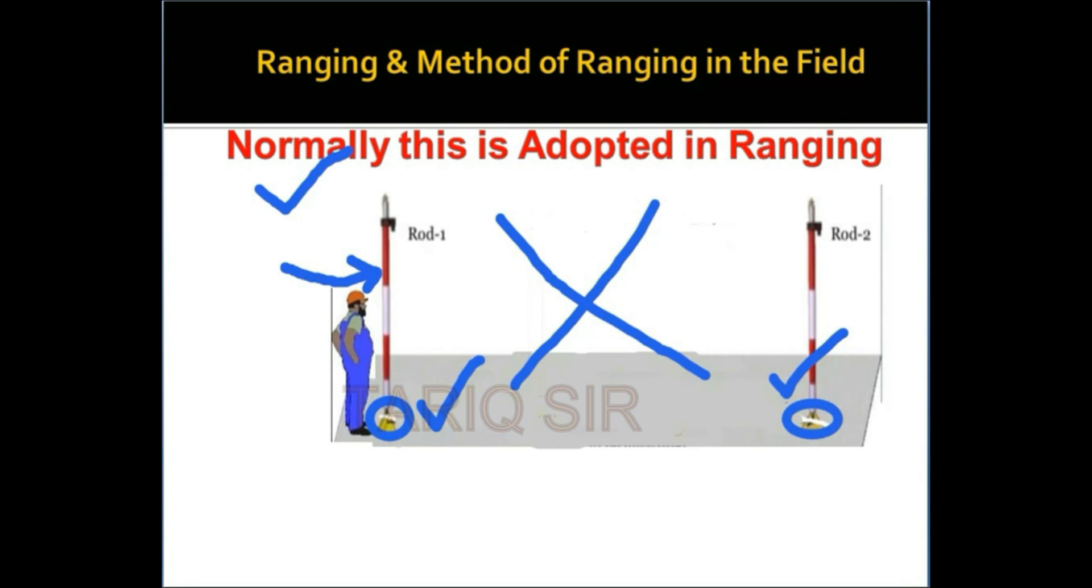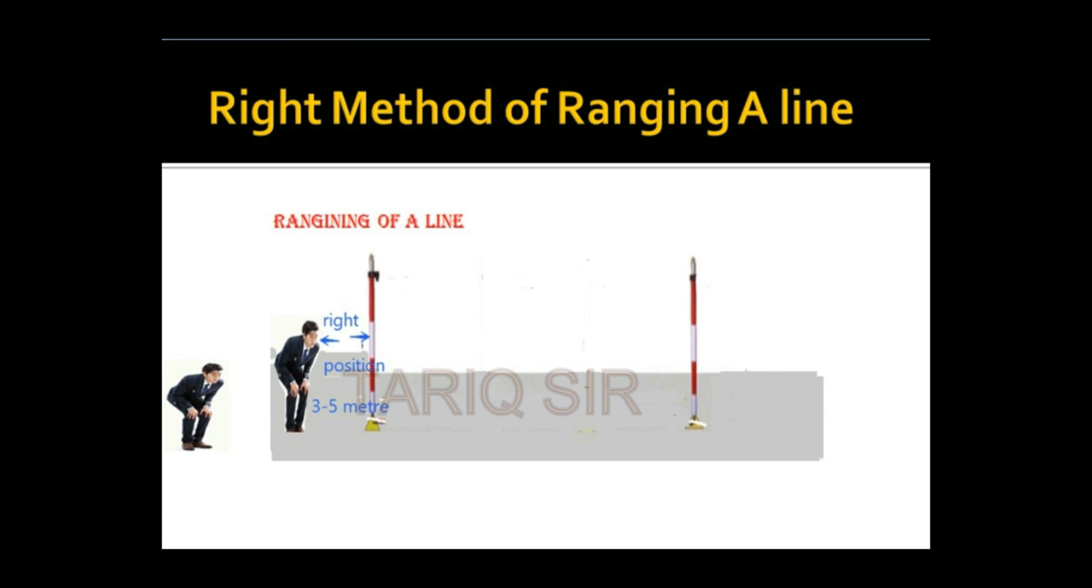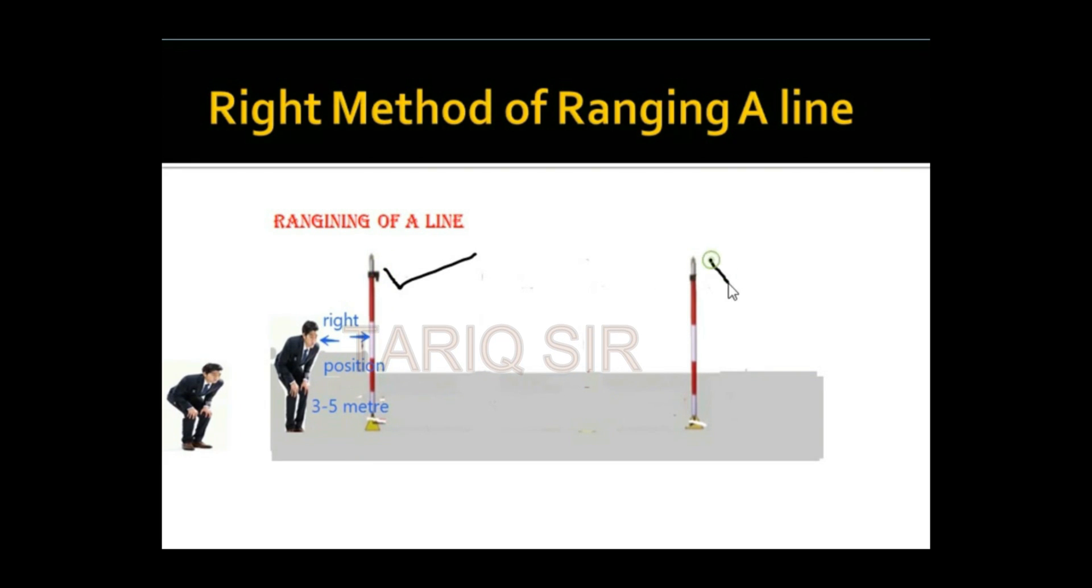The procedure that has to be adopted, here in the video as you can see, I have tried to explain the right position of ranging. You can see that there is a ranging rod A over here and ranging rod B over here. Now if your distance is 3 to 5 meters and you are able to watch these edges, that is the point that has been inserted in the ground, then your ranging will be accurate.